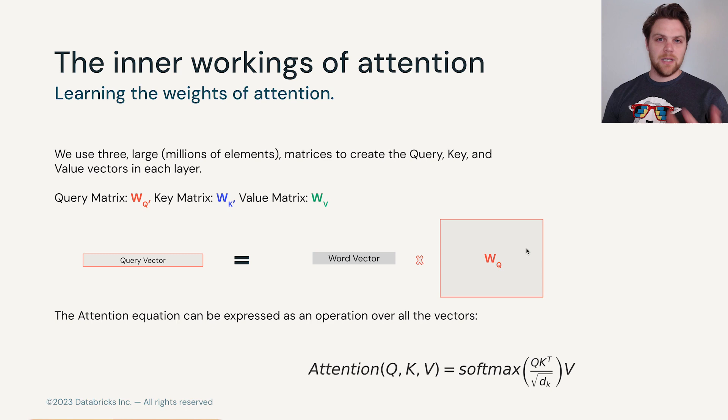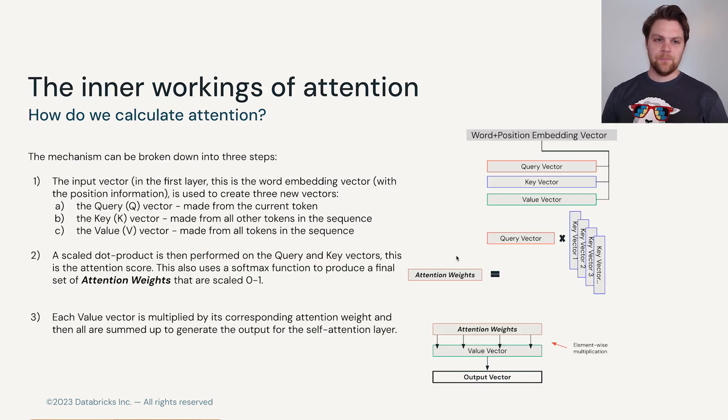Let's take a look at what happens in this situation. So to calculate attention, step one is we take our input vector, which if we're in the first layer is the word embedding vector with positional information and we create three new types of vectors. We create the query vector, the key vectors and the value vector.